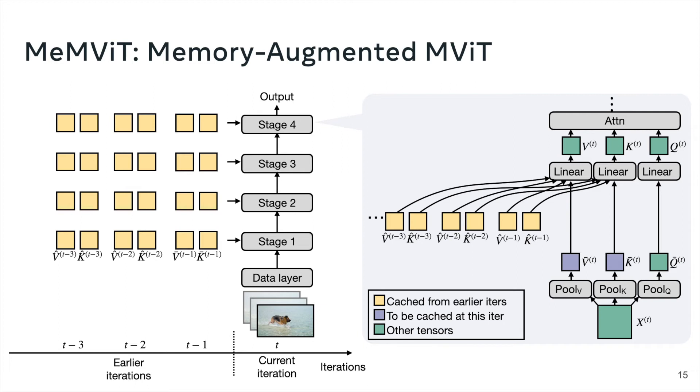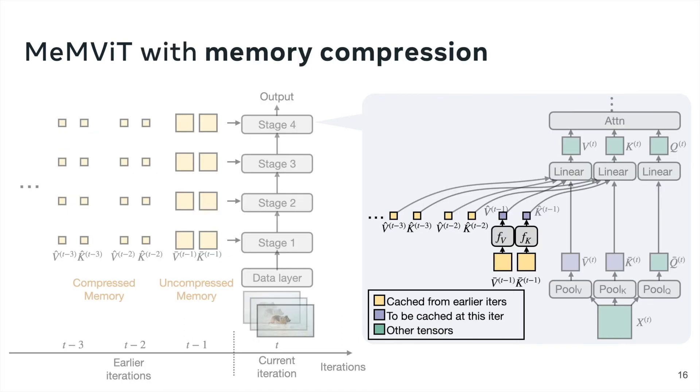But we also ask, is it really necessary to store all the full key and value tensors? To answer this question, we also propose a pipeline memory compression strategy, where we jointly train a memory compression module to reduce the footprint of the memory. Next, let's see how it works.